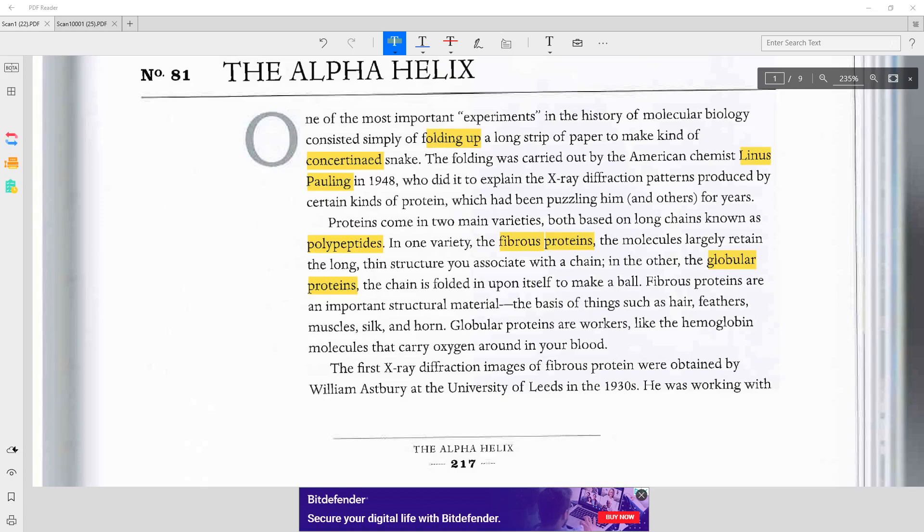The folding was carried out by the American chemist Linus Pauling in 1948, who did it to explain the x-ray diffraction patterns produced by certain kinds of protein, which had been puzzling him and others for years.